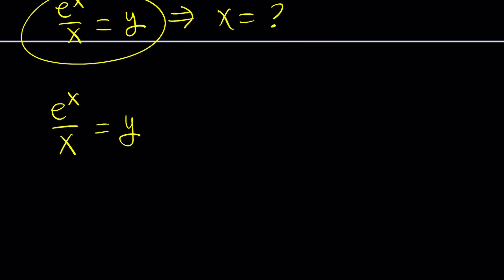So let's multiply both sides by x, like cross multiply. And then I'm going to put the x and e to the x on the same side. Actually, there's probably a better way to do it. Why don't we just flip both sides? That'll give us x over e to the x equals one over y.